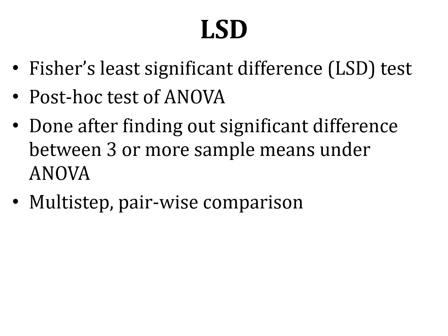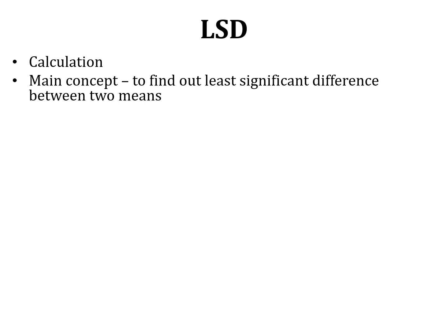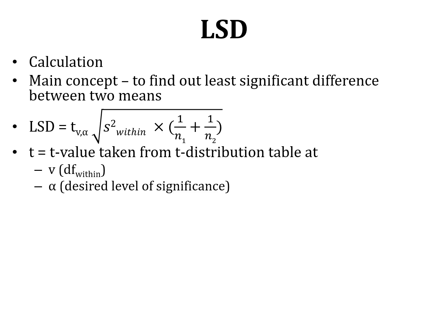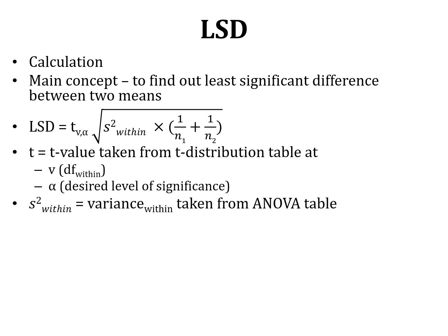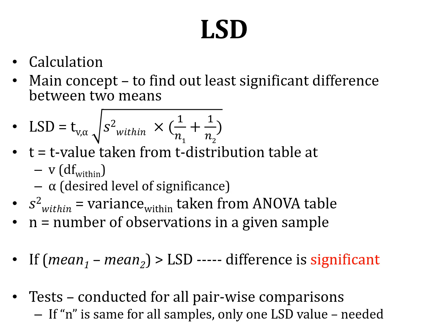LSD is a multi-step pairwise comparison that establishes which means are significantly different from each other. The main concept of LSD calculation is to find the least significant difference between two means using a formula where the t value is taken from the t distribution table at v degrees of freedom within and alpha, the desired level of significance, from the two-tailed t distribution. Variance within is taken from the ANOVA table and n is the number of observations in a given sample.